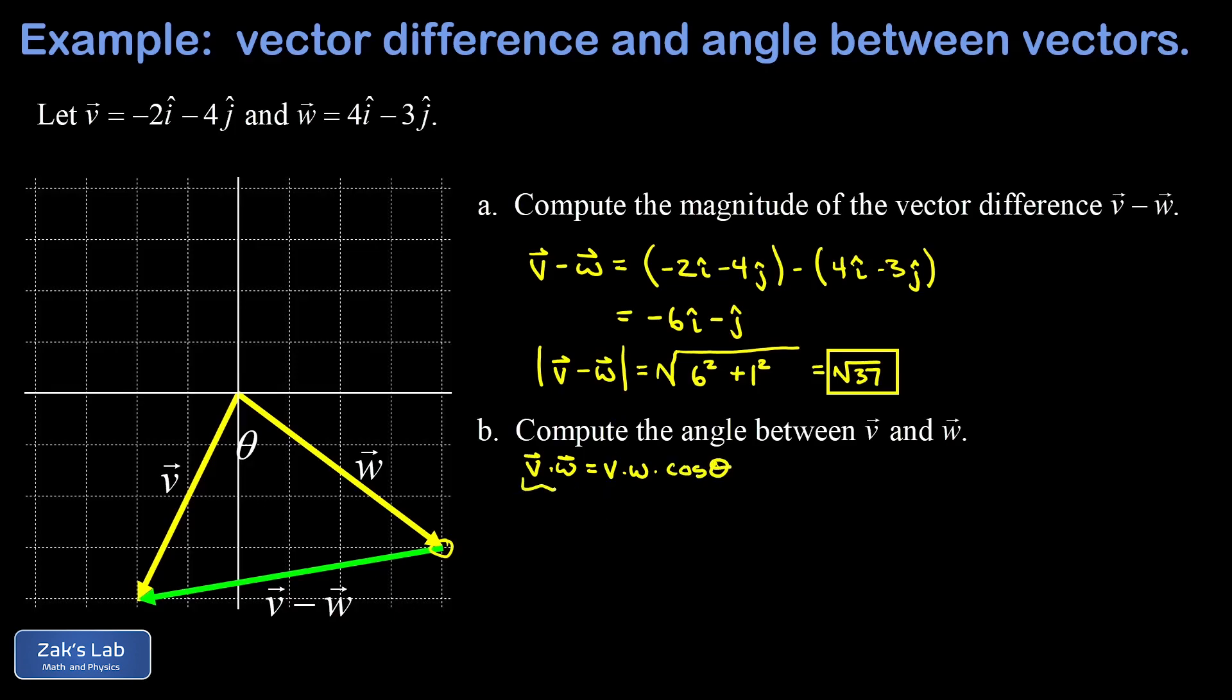All we have to do is figure out the dot product. That's not too hard because we have the components. Then we need the magnitude of v and the magnitude of w. The only unknown is theta. Starting with the dot product, we multiply components pairwise. The first product is -8, and the second one, -4 × -3, is +12. So -8 + 12 gives us a dot product of 4.